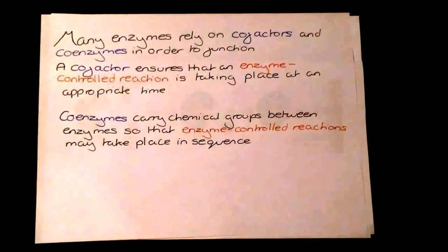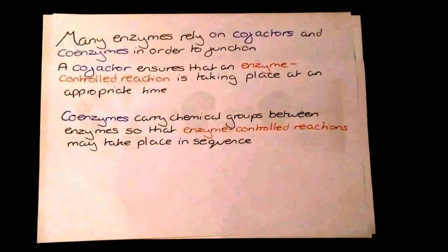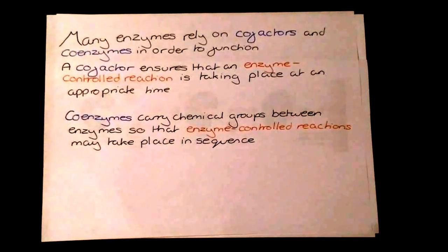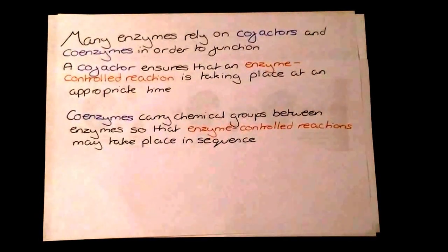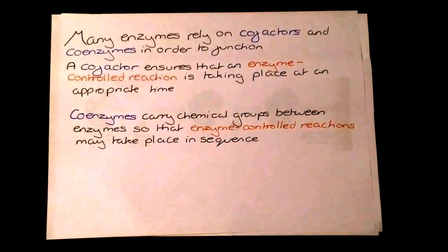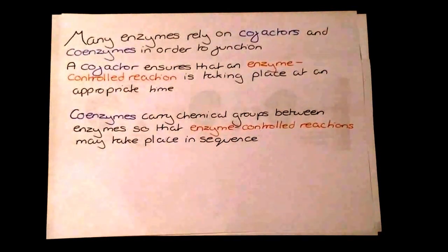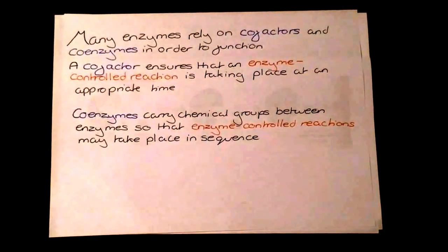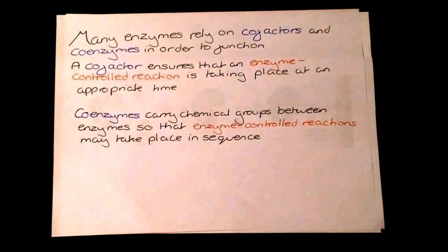Many enzymes rely on cofactors and coenzymes in order to function. A cofactor ensures an enzyme-controlled reaction is taking place at an appropriate time. Coenzymes carry chemical groups between enzymes so that enzyme-controlled reactions may take place in sequence.